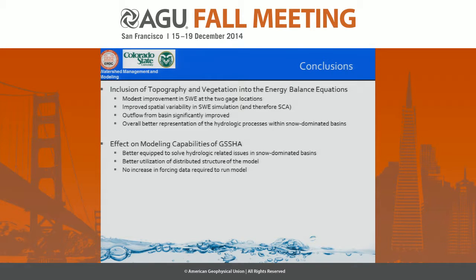In conclusion, inclusion of topography and vegetation within the energy balance simulation produced modest improvements at the two SWE point sites. But looking at the basin as a whole, we're improving the spatial variability of SWE, which in turn improves our outflow simulations and provides an overall better representation of hydrologic processes within the basin. In terms of modeling capabilities, we're better equipped to solve hydrologic-related issues in snow-dominated basins. The updated version better utilizes the distributed structure of the model, and there's no increase in forcing data required since we're calculating downward shortwave radiation internally.